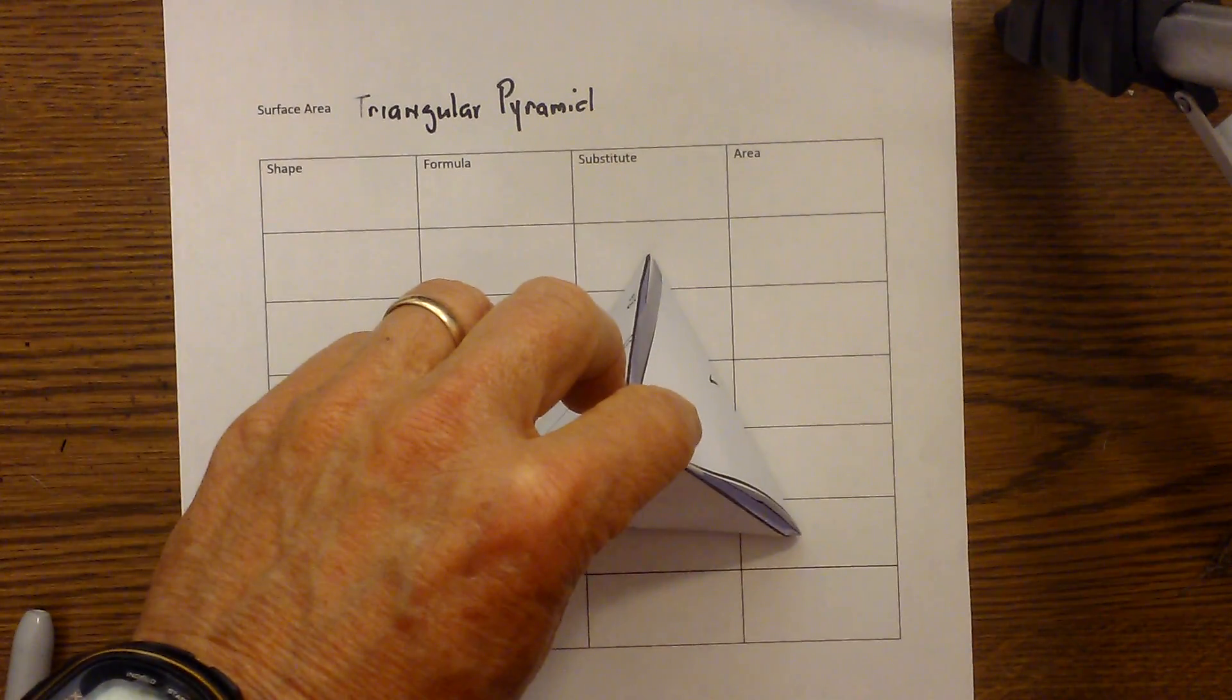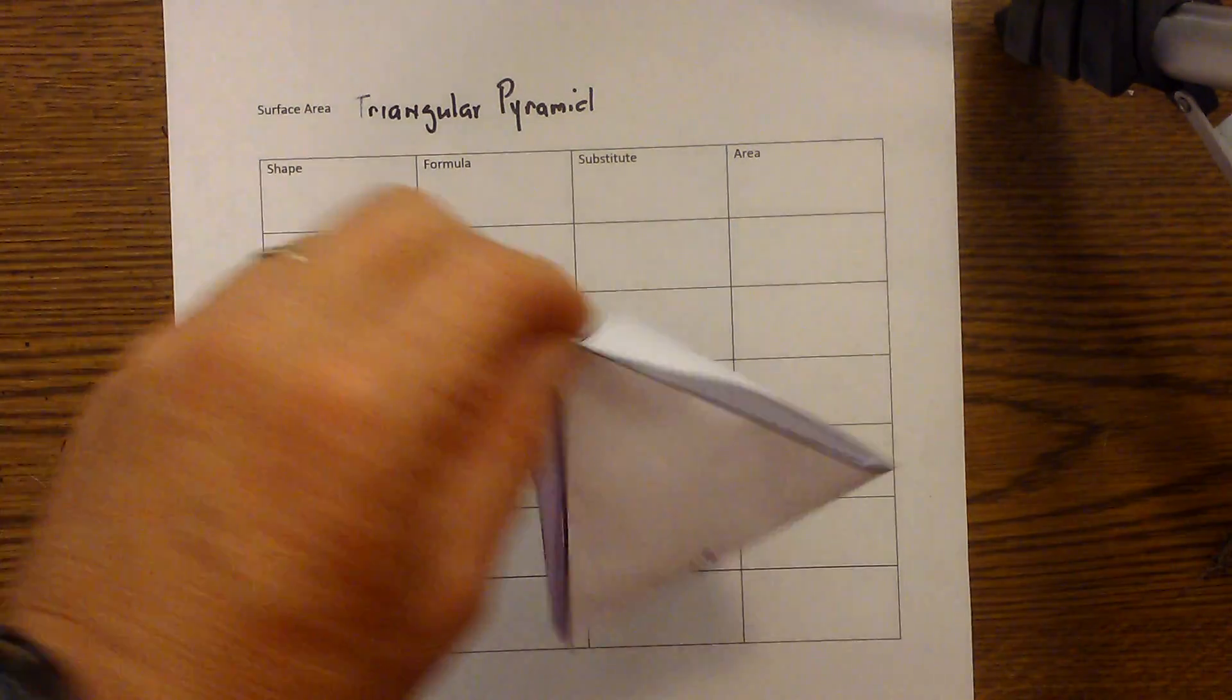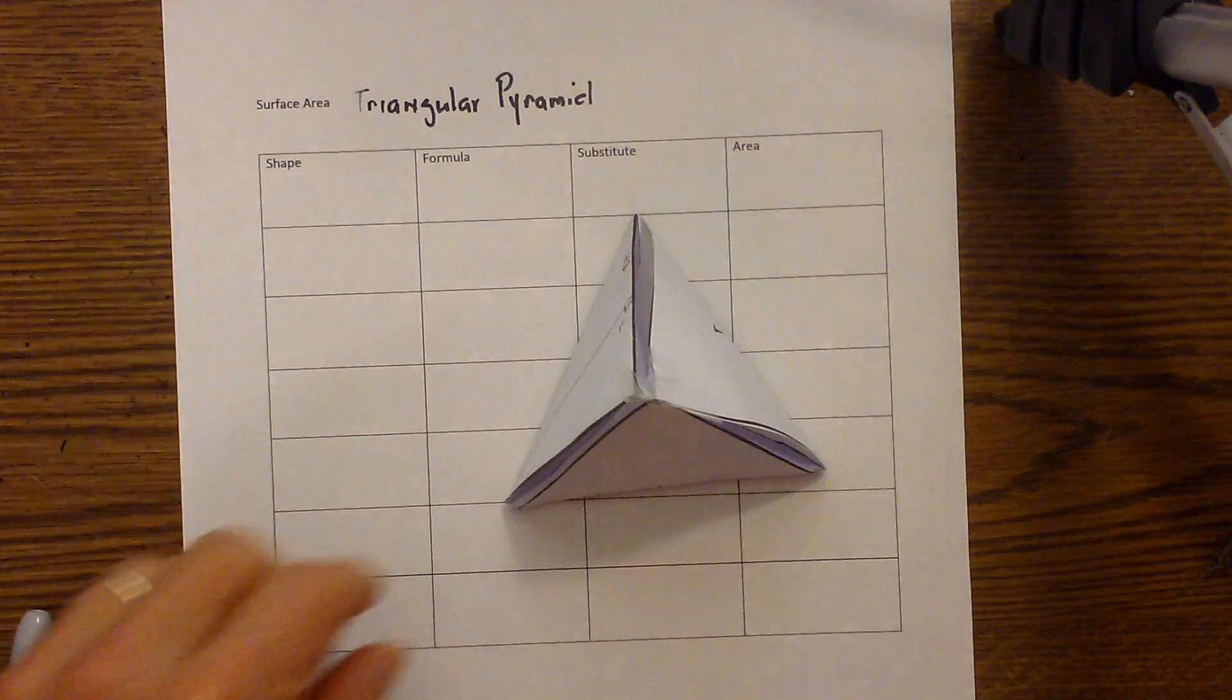This is a triangular pyramid because the base has a triangular shape, and pyramids are named after the shape of their base.